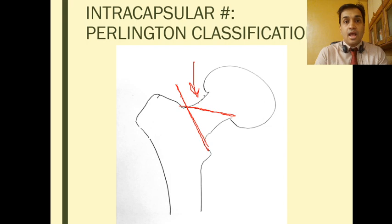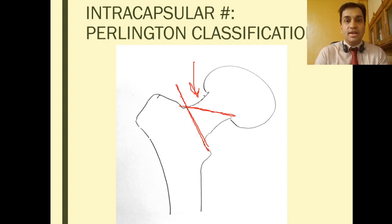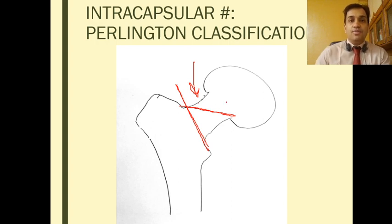Pauwels and Perlington are applied after the fracture has been reduced and the final position of the fracture line can be seen. In terms of emergency and damage control orthopedics, Garden classification is the one that can be used rapidly on the field.